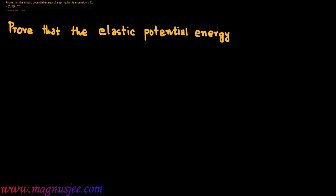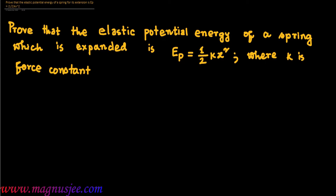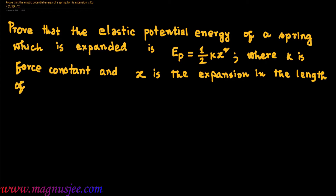The elastic potential energy of a spring which is elongated or expanded is Ep equal to half kx squared, where k is the force constant of the spring and x is the elongation or expansion of the spring.